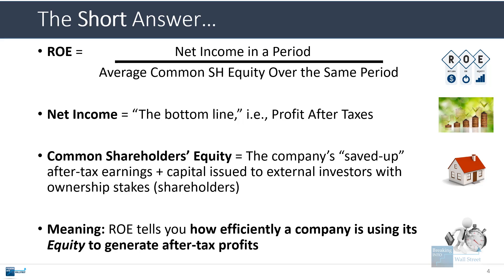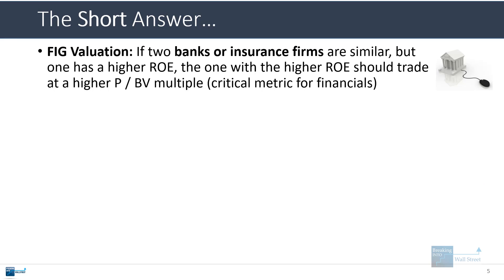Return on equity tells you how efficiently a company is using its equity to generate after-tax profits. If you are valuing a bank or insurance firm and one bank has a higher ROE than another but is similar in other ways — similar size, operates in a similar region — then the bank with the higher ROE should trade at a higher price-to-book value multiple. You can calculate price-to-book value by taking the equity value and dividing by the book value, or the common shareholders' equity on the balance sheet.